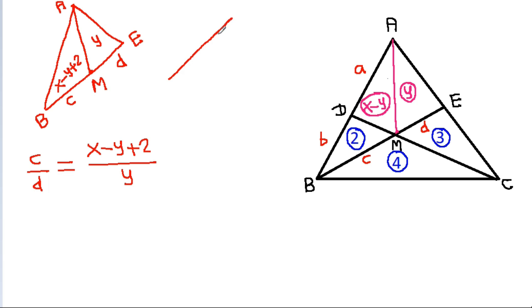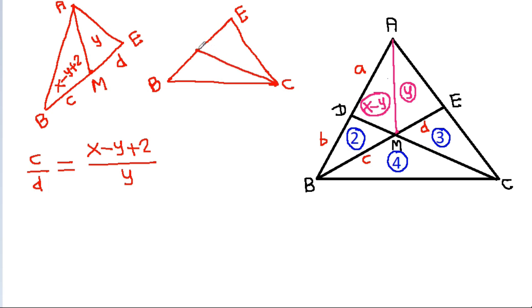Also, in triangle B, E, C with point M: BM is C and EM is D. This area is 4 and this area is 3. So C divided by D also equals 4 divided by 3.